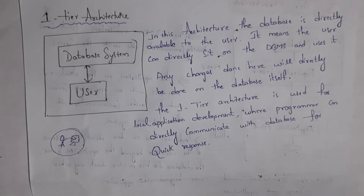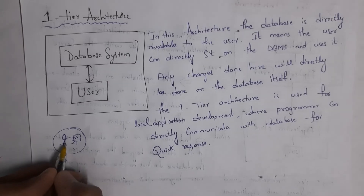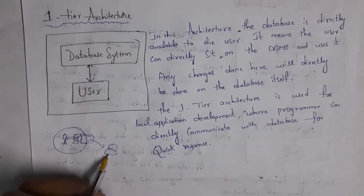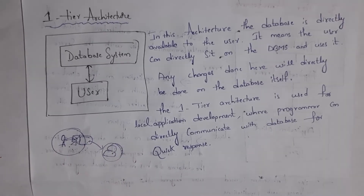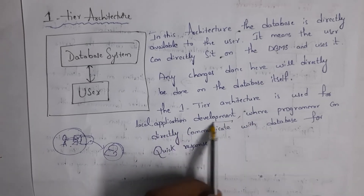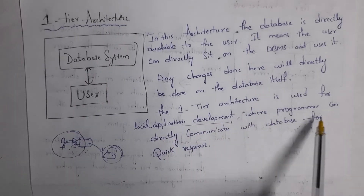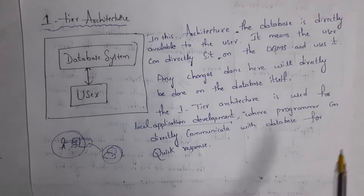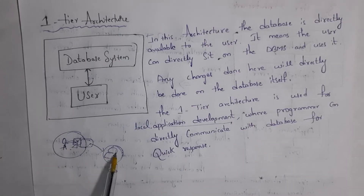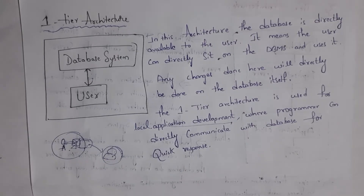Normally, one-tier architecture is used by programmers to develop local applications. For example, if I am a programmer and I want to create one small software, I need a database, so inside my system I will create the database. This one-tier architecture is used for local application development where programmers can directly communicate with the database for quick response.